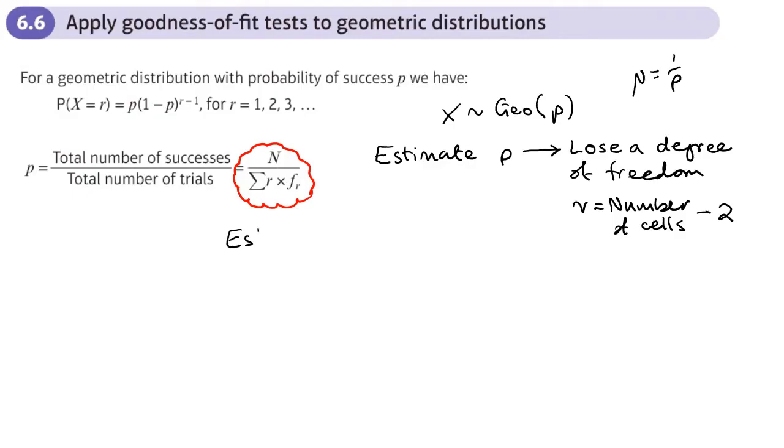So when we estimate P, that's going to be the number of observations N divided by the sum of each outcome times its probability. It looks upside down to the other ones we did before, it was the sum of R times F of R over N.